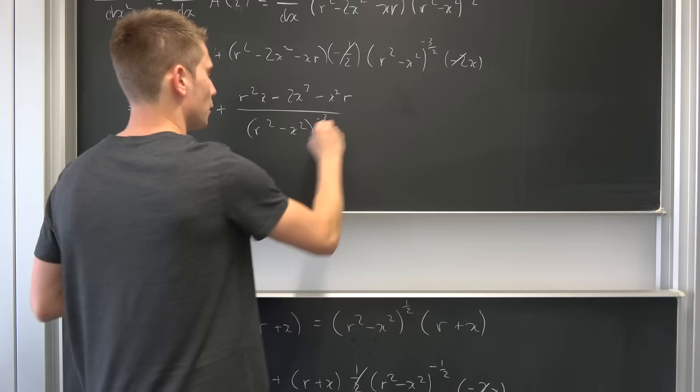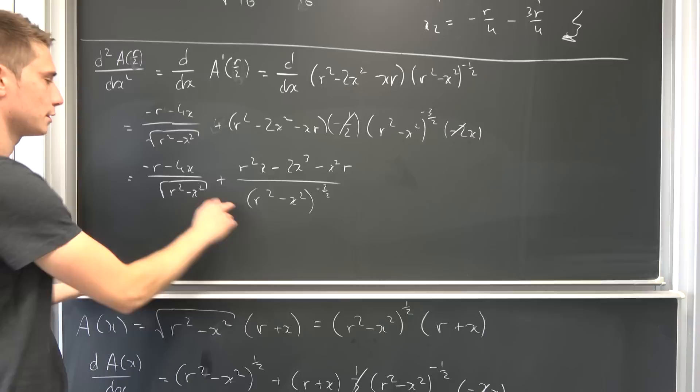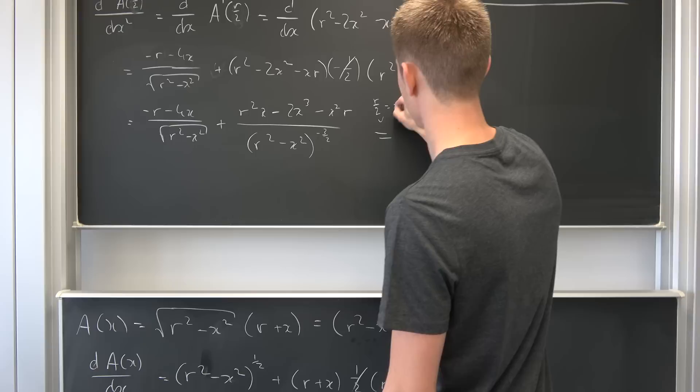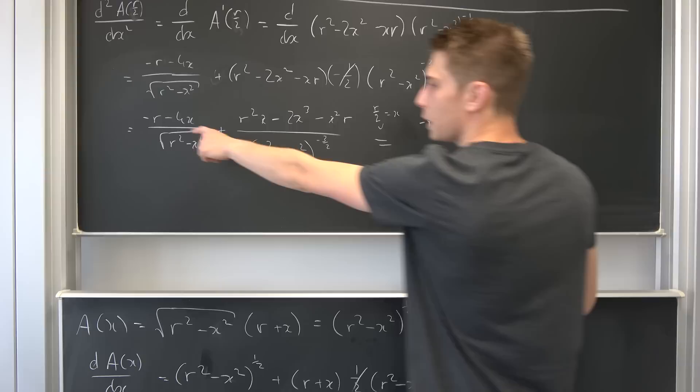And now we would like to plug in our r over 2 right here in this stuff. So this is plugging in r over 2 as our x. We end up with, this is negative r and we have negative 4 times... do we even need to do this? No, we don't.